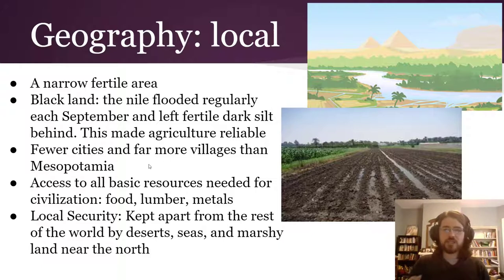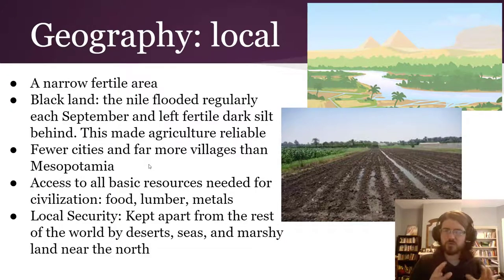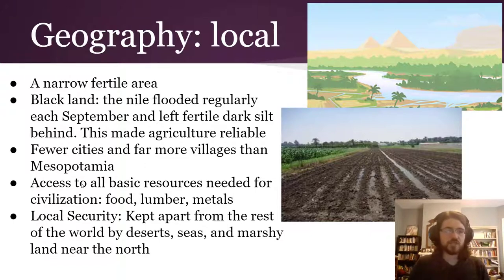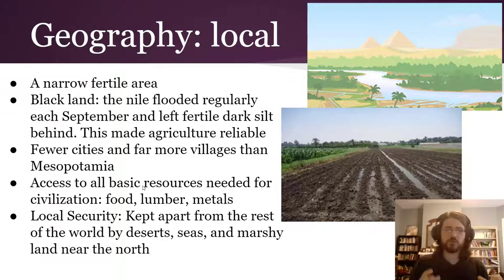In the development of Egyptian civilization, there were fewer cities and far more villages than in Mesopotamia, though some of that may relate to what we have in the archaeological record. They also had access to basically all the resources needed to build their civilization — food, lumber, metals — within relatively easy reach. So they were very self-sufficient, getting along just about fine on their own, and were a little more isolated.